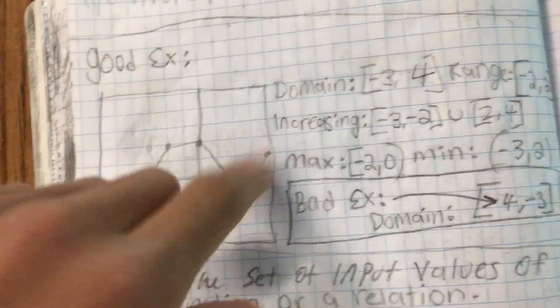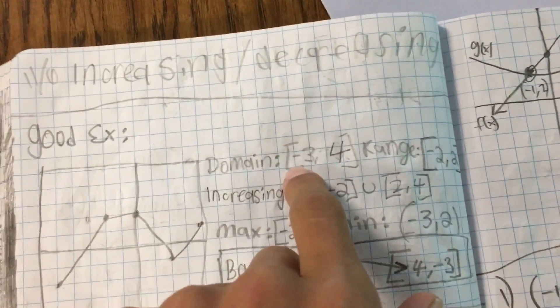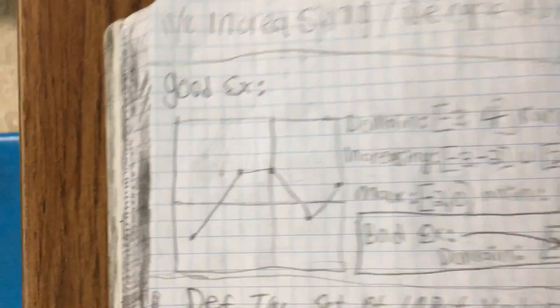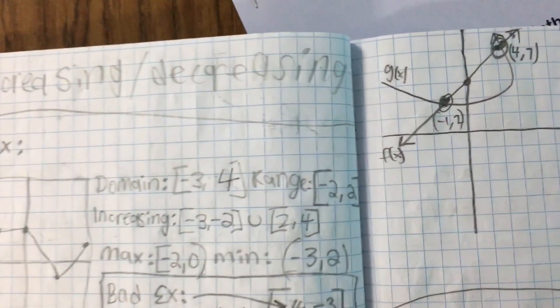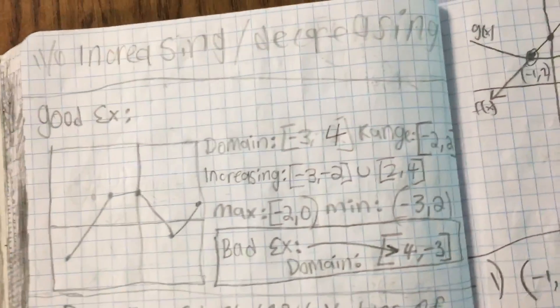it's going up and then domain will be negative 3 comma 4, it's over negative, down negative 3, and range negative 2 comma 2.